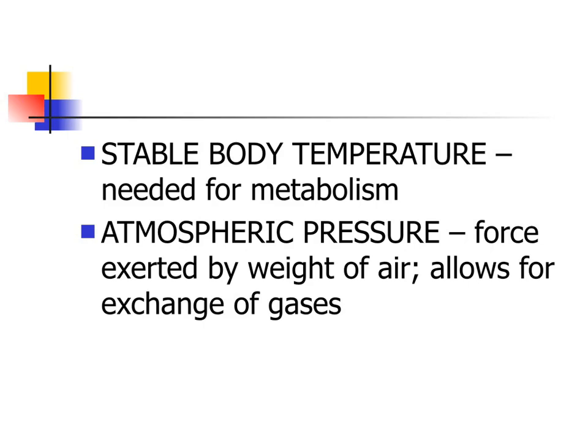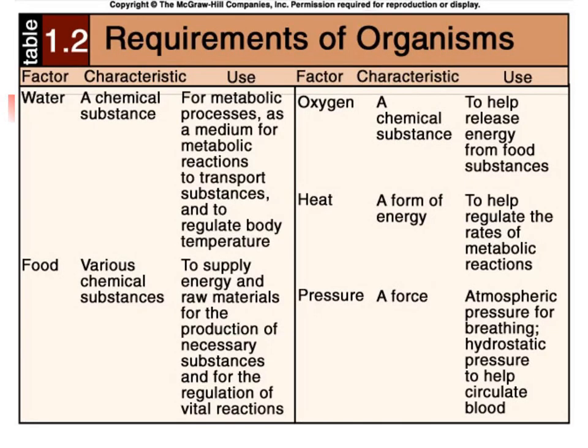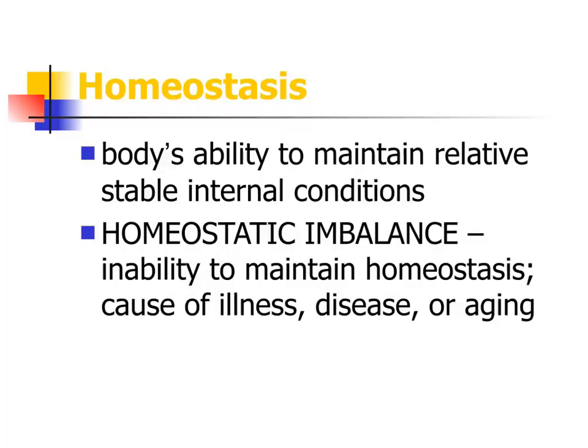Similarly, if you go deep underwater, there has to be something that regulates the pressure, because too much atmospheric pressure could cause problems with respiration and blood pressure. Table 1.2 shows the survival needs, the five factors, their characteristics, and their specific uses that help organisms survive. All eight necessary life functions and five survival needs work together with the whole purpose of maintaining homeostasis.